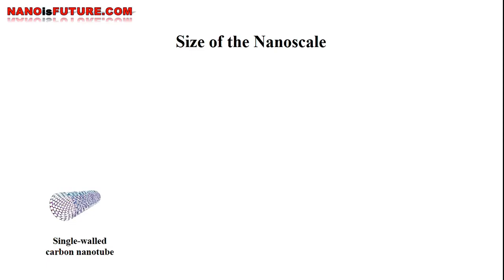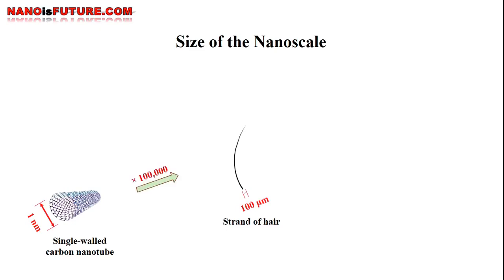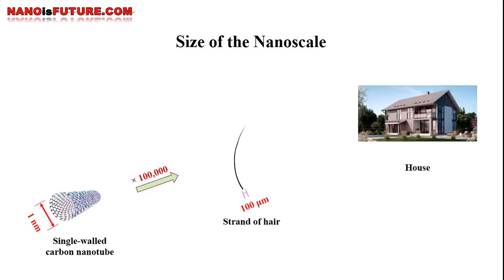A single-walled carbon nanotube is about 1 nanometer in diameter. A strand of human hair with 100 micrometers diameter is 100,000 times the diameter of a carbon nanotube. And an average house with 10 meters width is 100,000 times the diameter of a human hair.